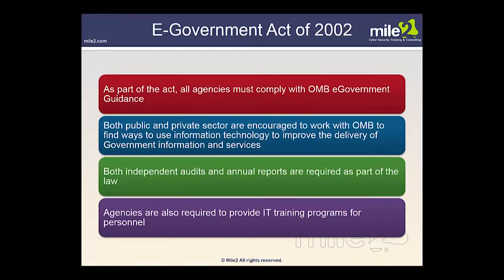As part of the E-Government Act of 2002, all agencies must comply with the OMB e-Government guidance. Both public and private sectors are encouraged to work with OMB to find ways to use information technology to improve delivery of government information and services. Both independent audits and yearly annual reports are required, and agencies are required to provide IT training programs for their personnel.